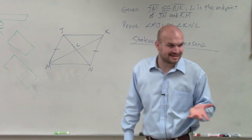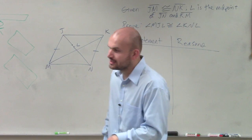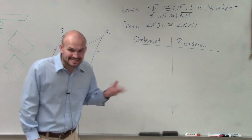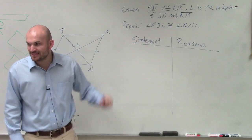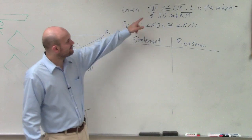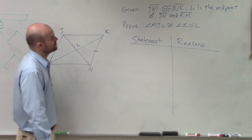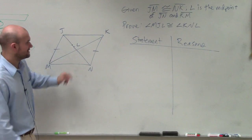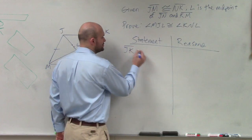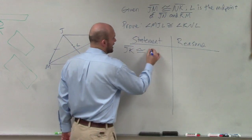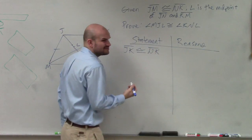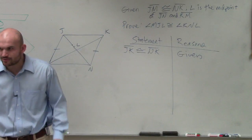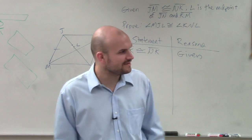They can't be our opinion. We have to irrefutably know that they are true. So the easiest things to prove that are true are what information you've been given. So we have been given JM is congruent to NK. Is that true? Yes. Why is it true? Because it's given to us. Unless the book is lying to us — well, that wouldn't really make too much sense. That information is given.